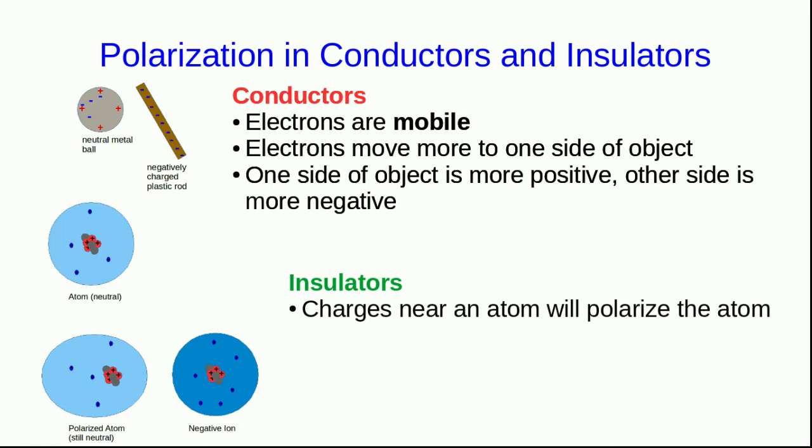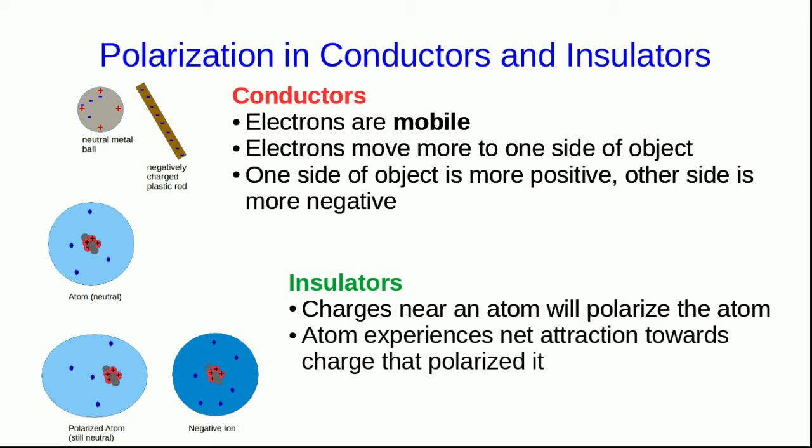What about insulators? In an insulator, the electrons aren't mobile within the object. However, the atoms themselves can still be polarized. When an atom is brought near to a charged object, such as a negative ion, the atom will become polarized. It will experience a net attraction towards whatever charge it was that polarized it.